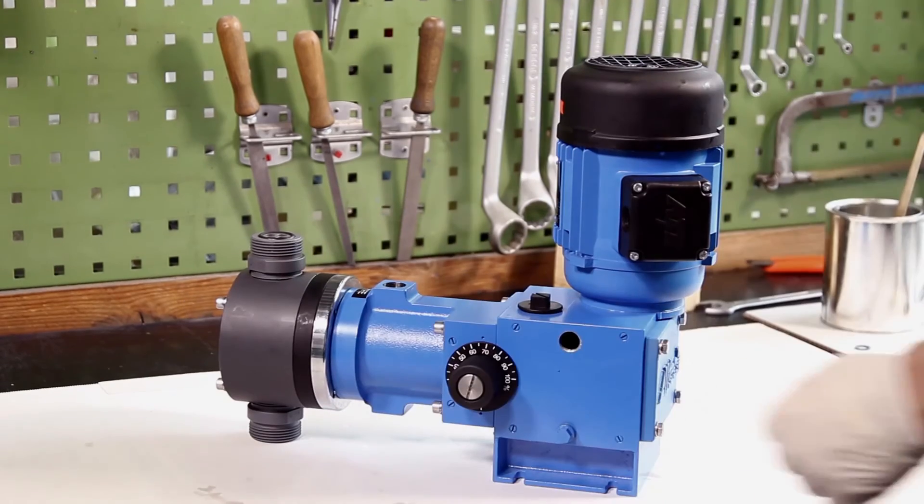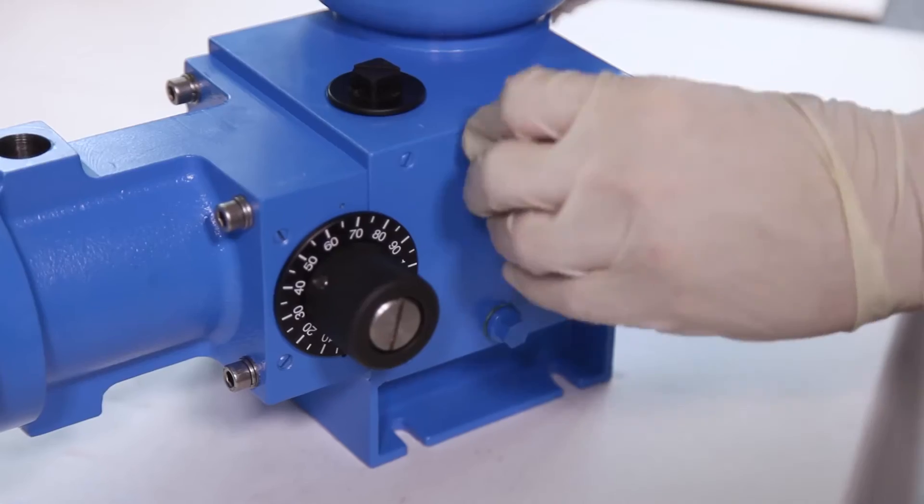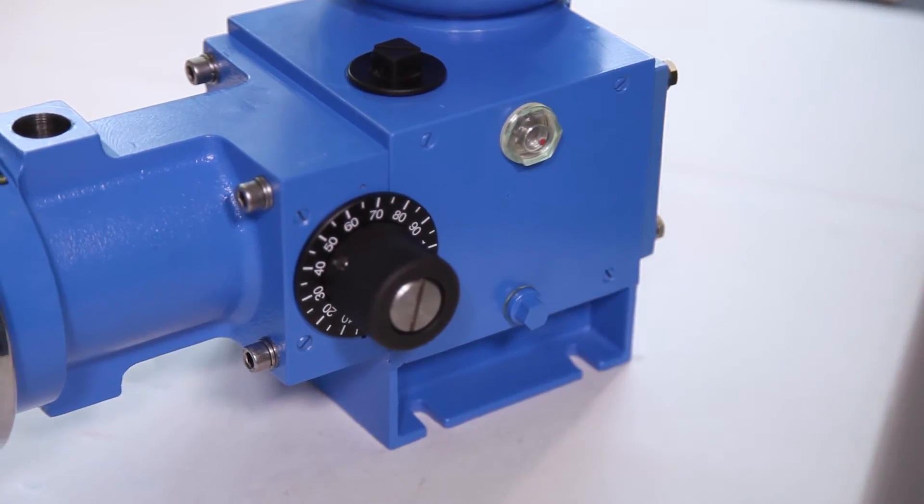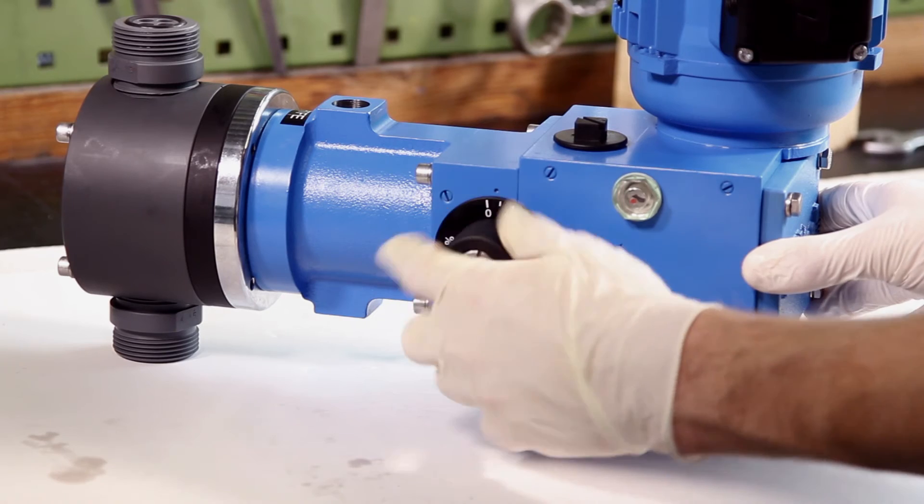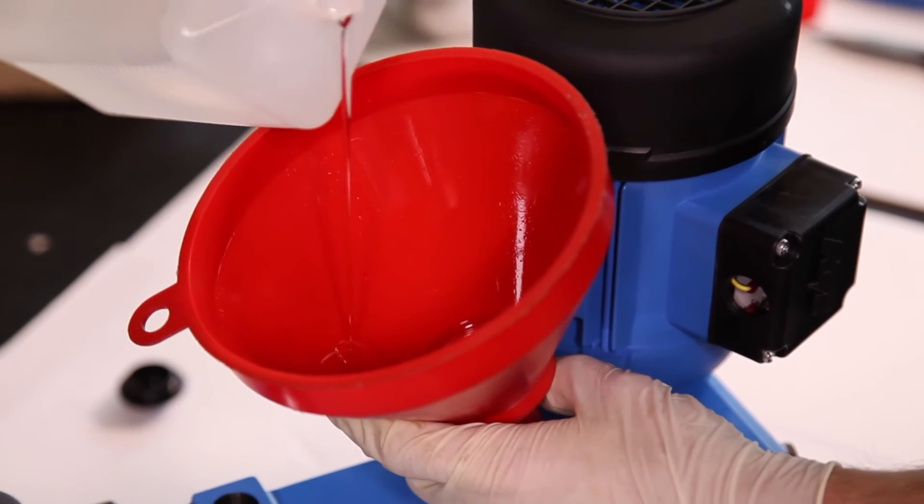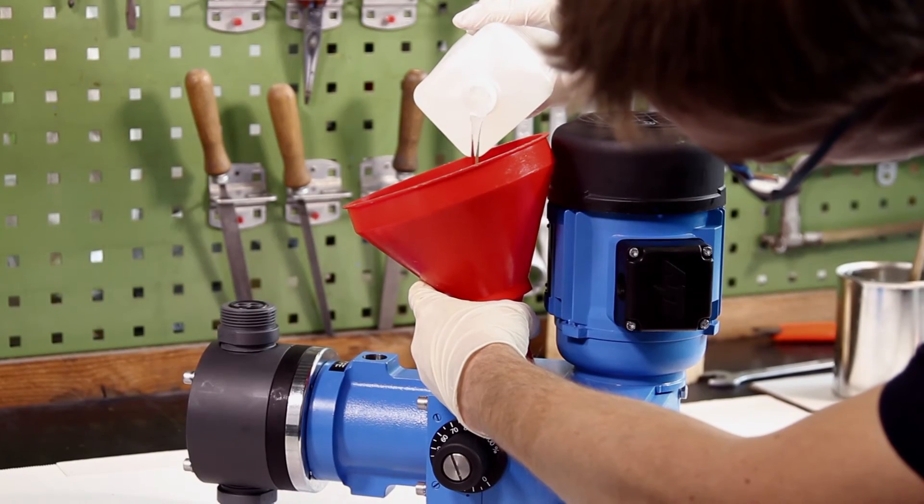Before the pump can be filled with oil, a new oil level glass must be screwed in together with the flat gasket. The stroke length must be turned in clockwise direction to the stop. Now the hydraulic oil is slowly poured into the drive gear until the oil level sight glass is covered to three quarters.